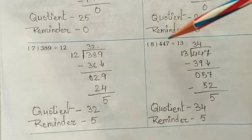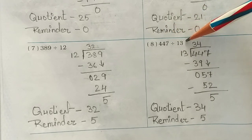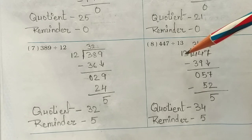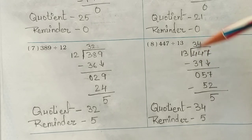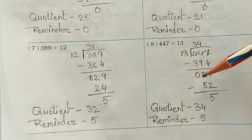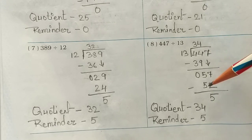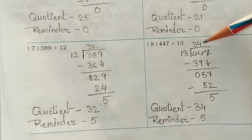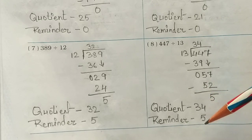Eighth number: 447 divided by 13. Write 13 here. 13 threes are 39 — subtract from 44 and you get 5. Bring down the 7 to get 57. 13 fours are 52, so 5 is the remainder. Your answer is 34 and the remainder is 5.